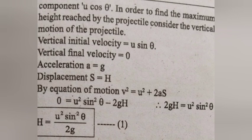Therefore, 2gh is equal to u square sin square theta. So, the expression for maximum height reached by a projectile: H is equal to u square sin square theta divided by 2g.